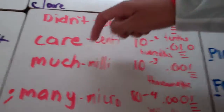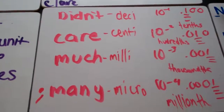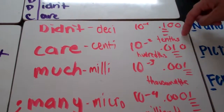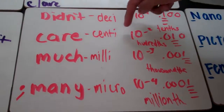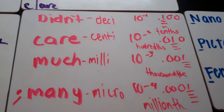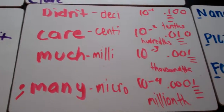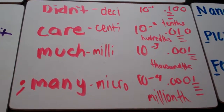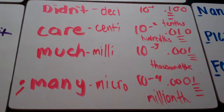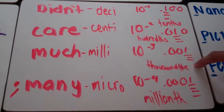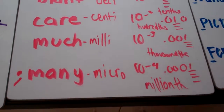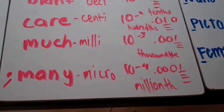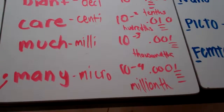The next part is 'Didn't Care Much.' The D stands for Deci, and that's 10 to the power of negative 1 in scientific notation, representing the 10ths place.